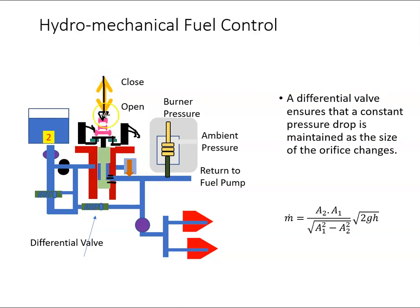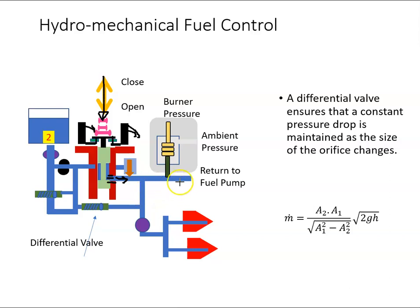The pilot's throttle directly controls this valve — by moving the throttle back and forth it raises and lowers this valve, controlling the amount of fuel coming out.